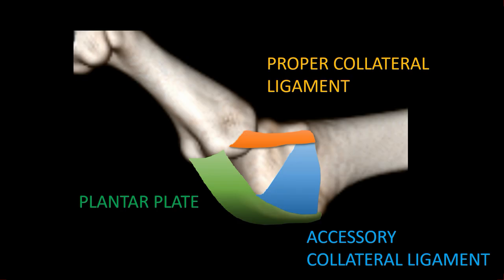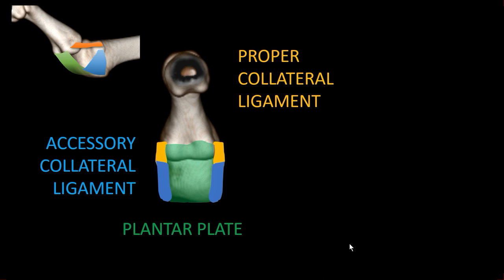Before we start with the MR anatomy we first have to understand the concept of the plantar plate and its ligaments. Shown here in this lesser metatarsophalangeal joint, we have the plantar plate made of fibrocartilage here in green, then we have the proper collateral ligament and an additional accessory collateral ligament originating from the metatarsal head and inserting into the plantar plate. Changing the view, we have the plantar plate spanning from the metatarsal head to the base of the proximal phalanx, with the accessory collateral ligament inserting into the plantar plate and the most upper portion being the proper collateral ligament.